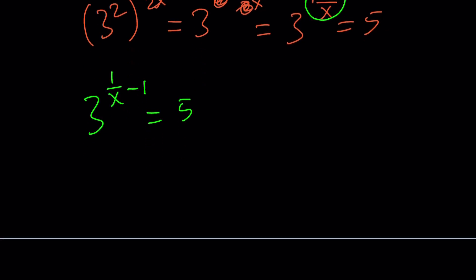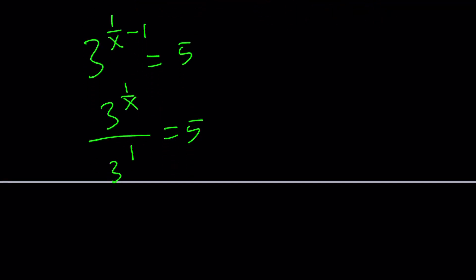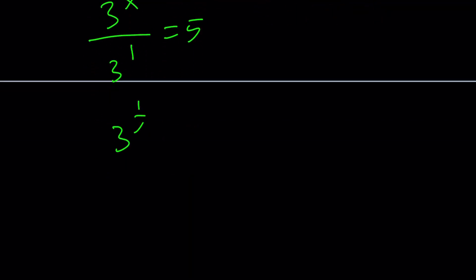Since the exponents are being subtracted, I can write it as a quotient: 3 to the power 1 over x divided by 3 equals 5. If you divide two powers at the same base, you subtract the exponents. Reverse that. I can multiply both sides by 3 or cross multiply. That gives me 3 to the power 1 over x equals 15.